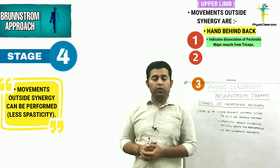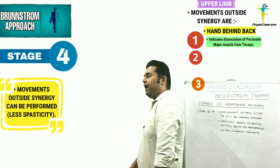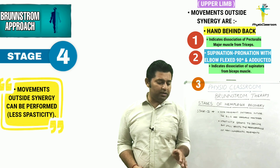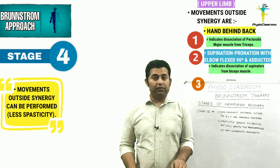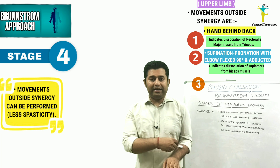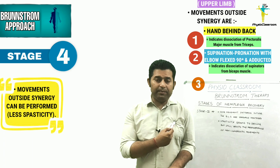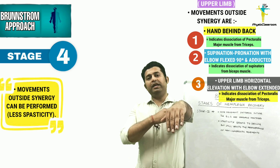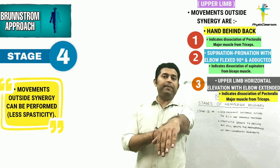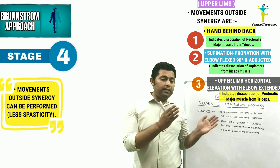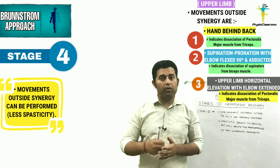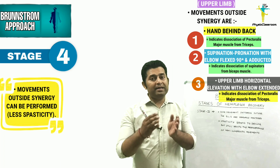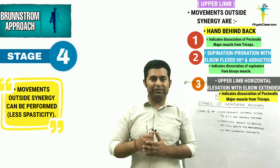These three movements are: first, to ask the patient to take the hemiplegic upper limb and place it behind the body; second, to perform pronation and supination movements with the elbow kept at 90 degrees of flexion and the arm beside the body; and third, to horizontally elevate the hemiplegic upper limb while keeping the elbow extended. If the patient can perform one or more of these movements, we can categorize them into Stage 4 of hemiplegic recovery.